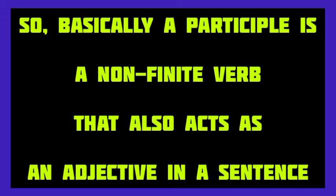Now the concept is clear. A participle is made from a verb in the third or fourth form and it may act both as a verb as well as an adjective in the sentence.